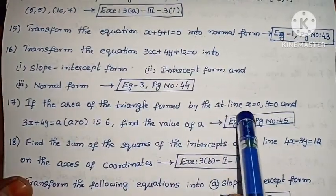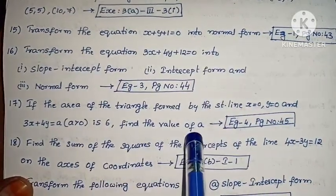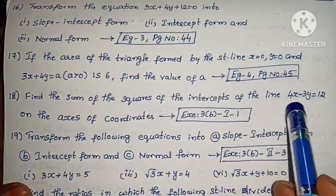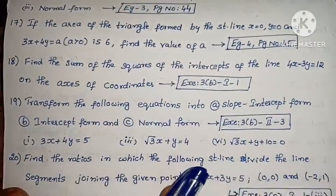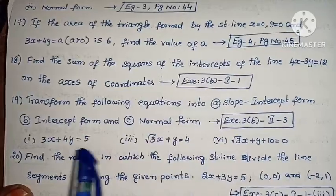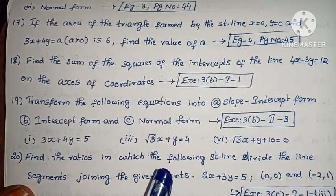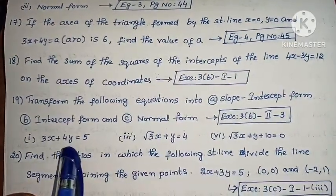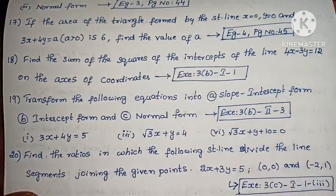If the area of the triangle formed by the straight lines x equals to 0, y equals to 0 and 3x plus 4y equals to a (where a greater than 0) is 6, find the value of a. Example 4, page number 45. Next, find the sum of the squares of the intercepts of the line 4x minus 3y equals to 12 on the coordinate axis. Next, transform the following equations into slope intercept form, intercept form, and normal form: (i) 3x plus 4y equals to 5, (ii) root 3x plus y equals to 4, (iii) root 3x plus y plus 10 equals to 0. Very important.